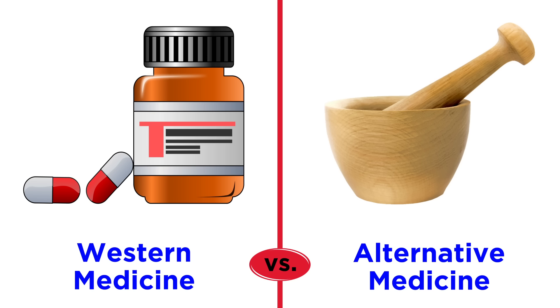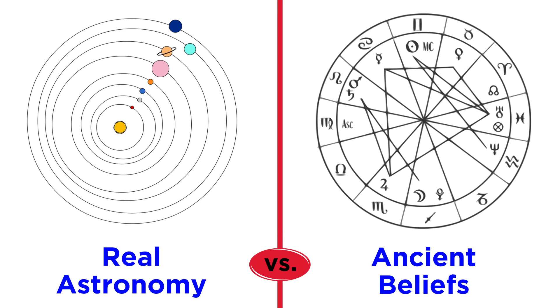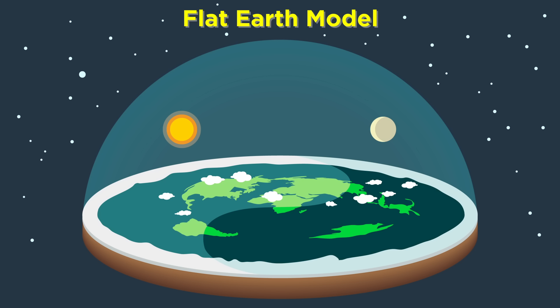For one thing, just the way that an understanding of chemistry and biochemistry makes it easy to refute things like alternative medicine, the understanding of astronomy we have just gained will make it easy to refute similarly alternative cosmological models, most notably the present fad that is the flat earth model.